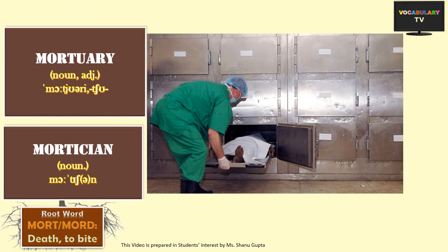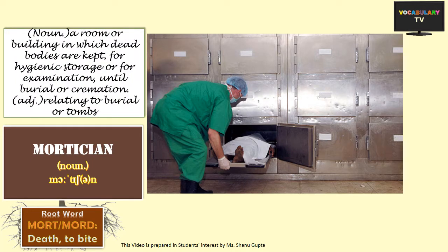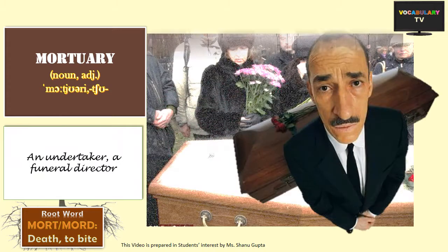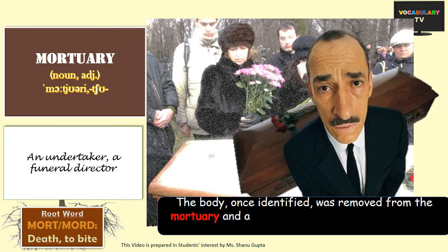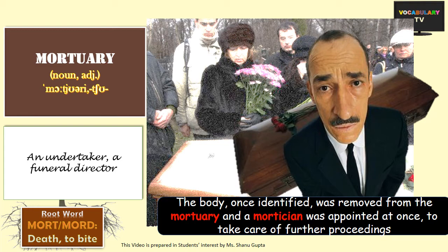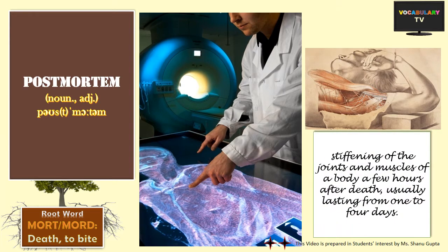Coming to more easy words derived from the root 'mort', we have 'mortuary' and 'mortician'. A mortuary, or funeral home, is a room or building which is a temporary abiding place of the dead person until he is entombed or cremated. The word 'mortician' refers to the funeral director or undertaker who is in charge of such death ceremonies. For example: the body, once identified, was removed from the mortuary, and a mortician was appointed at once to take care of further proceedings. Handling a dead body is not easy — the relatives, or in some cases the mortician, must deal with rigor mortis, the stiffness that death brings to the limbs of a corpse which makes them difficult to move.